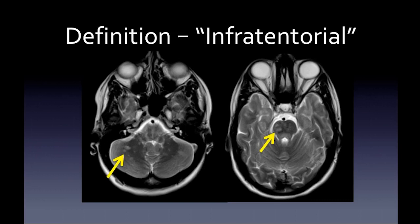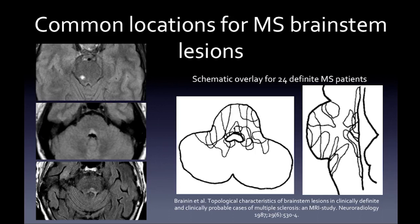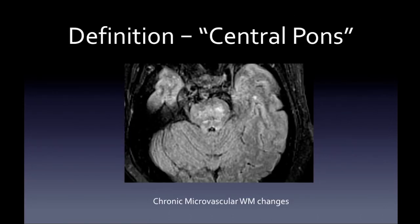Infratentorial lesions — brainstem and cerebellum — usually affect the white matter in the cerebellum and white matter tracts of the brainstem. Common MS brainstem lesion locations include the medial lemniscus, the medial longitudinal fasciculus, and the superior cerebellar peduncles, as well as any of the superior, middle, or inferior cerebellar peduncles. A 1987 paper showed an overlay of common MS lesion locations in the brainstem along ascending and descending white matter tracts.